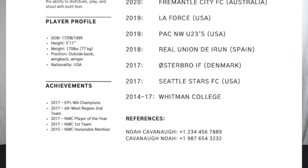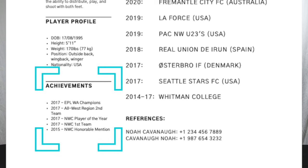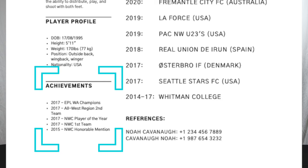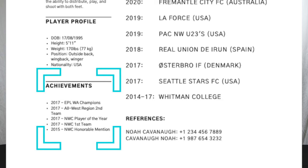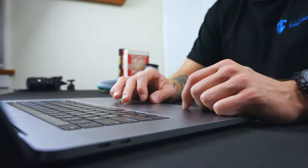Moving down from there, you've got a section for achievements — so that's awards you've won and teams you've played for that won championships. The stuff I have includes winning the EPL Washington championship in 2017 with the Seattle Stars, being named All-West second team and college player of the year, first team, honorable mention, all that stuff. I was also captain of the Rockingham City team, so I put that in there. Just highlight your leadership awards and the most prestigious things about your career.